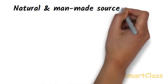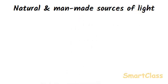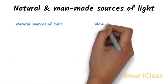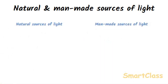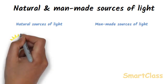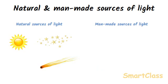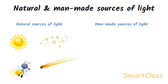All the sources of light can be divided into two groups: natural sources of light and manmade sources of light. Those sources of light which occur in nature as such are called natural sources of light. The sun is the best natural source of light. Nearly all the natural light we receive on the earth comes from the sun. The stars, meteors and firefly are the other natural sources of light.